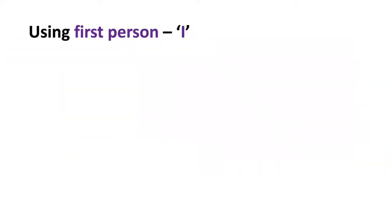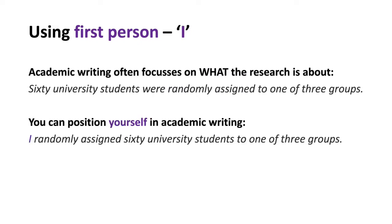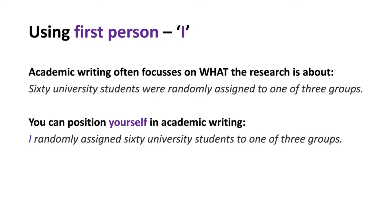Academic writing tends to focus on what the research is about, but you can position yourself in the writing by using 'I'. However, this often depends on your topic and discipline. Check with your supervisor about the use of 'I' in your writing.